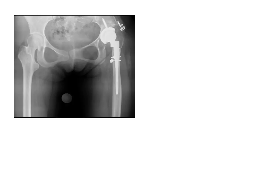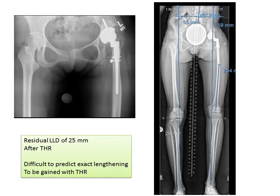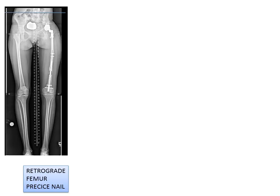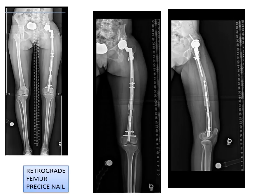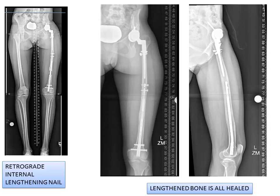After hip replacement, we were able to achieve part of the lengthening, and an analysis after that shows that there's a residual leg length discrepancy of 25 millimeters. The amount of lengthening achieved during hip replacement is constrained by the soft tissue envelope and the sciatic nerve. It's difficult to predict the exact amount of lengthening to be gained, and one can only do it in a safe manner by not overstretching the nerve. The residual leg length discrepancy was treated by lengthening the bone with a retrograde precise femur nail inserted from the distal aspect of the femur, allowing gradual lengthening until the leg lengths are equal. The femur healing progressed nicely, and the bone is fully healed.